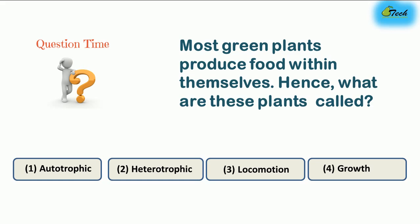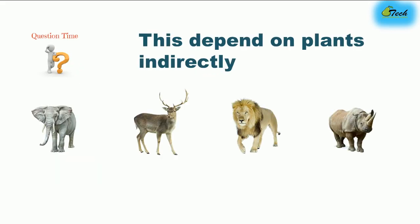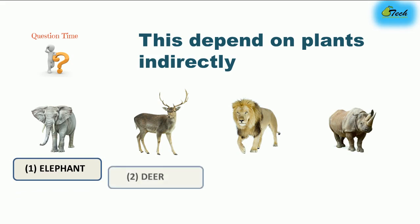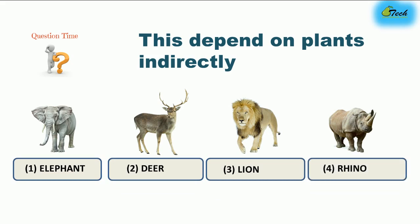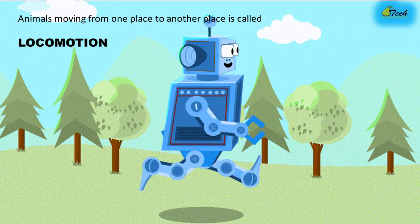The question again: which animal depends on plants indirectly? The elephant does eat plants. The lion does not eat plants. Rhino eats grass, not animals. So the lion is the correct answer — it depends on plants indirectly by eating other animals.